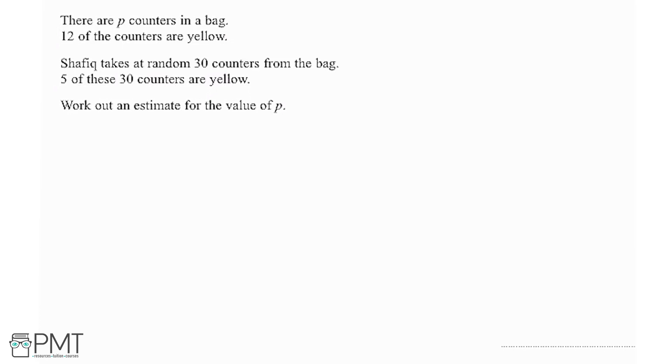So essentially we need to work out how many counters there are in the bag. Looking at these top two lines, we have 12 out of p are yellow, and we know on a random occasion taking 30 counters out of the bag, 5 were yellow. 5 out of 30 were yellow.